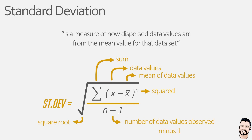Now, how do we know when to use n and how do we know when to use n minus one? Well, it all comes down to whether the data values you observed represent a sample of a larger population or the entire population itself. And determining this can be easier said than done.